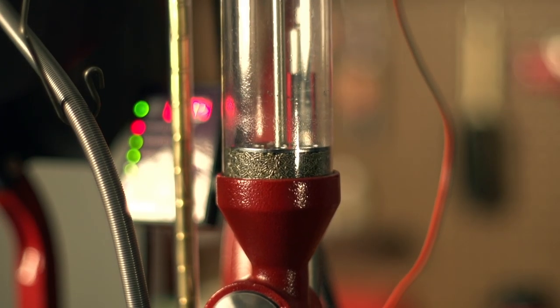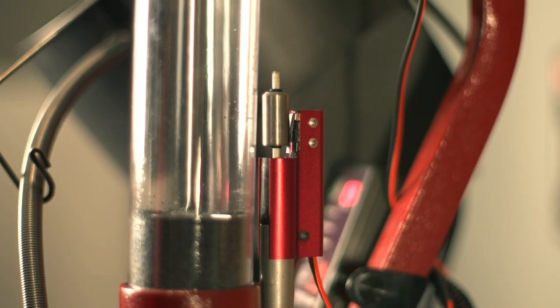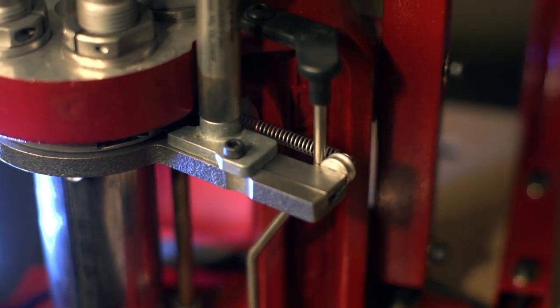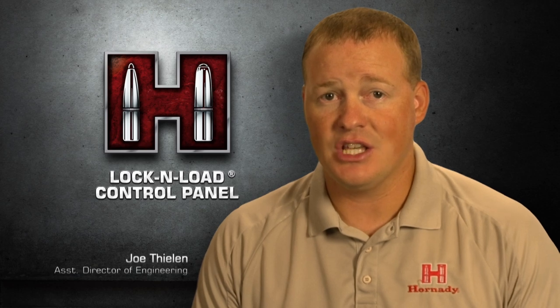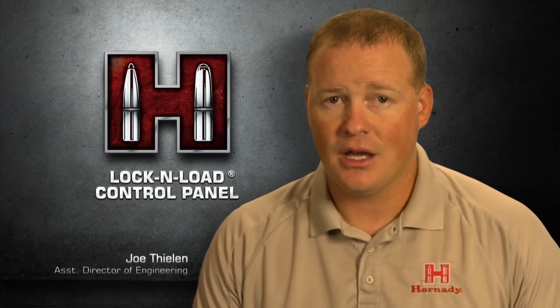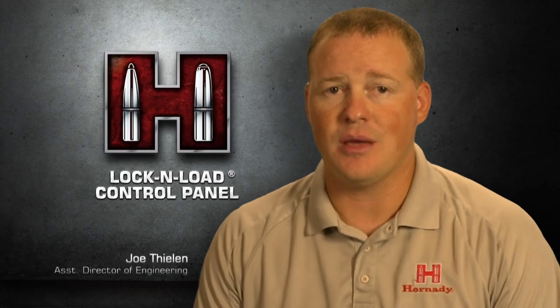We can monitor the level of powder in the hopper, level of primers in the tube, the actuation of the primer slide. We're going to check each and every case for powder with the Safeguard Die, and we're going to count the amount of rounds you've loaded on your AP.